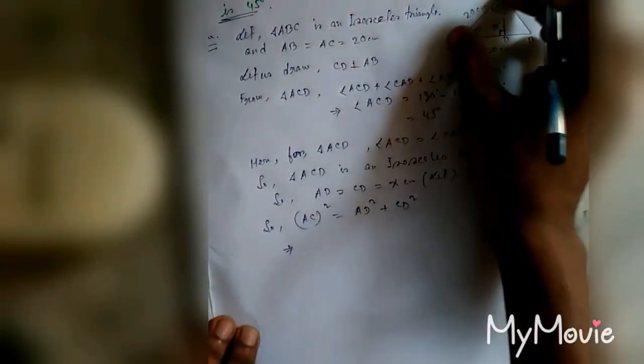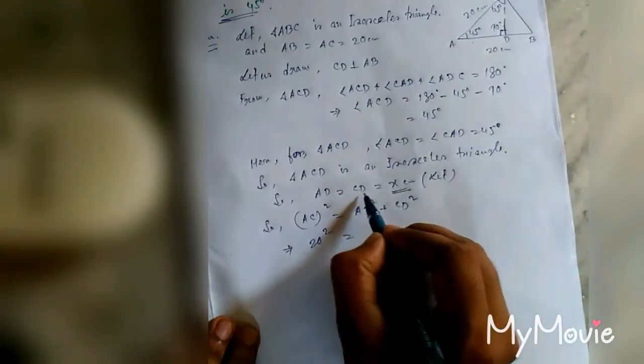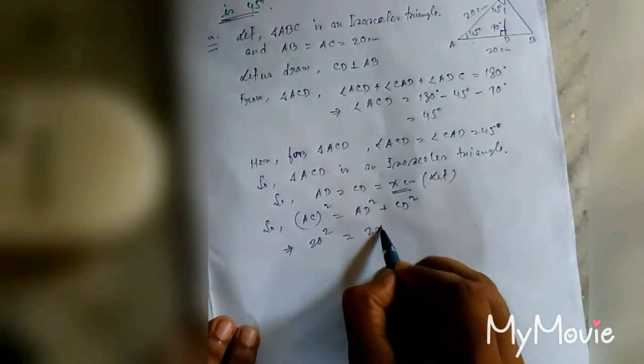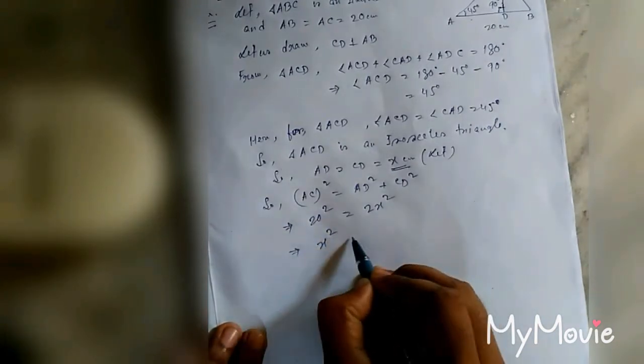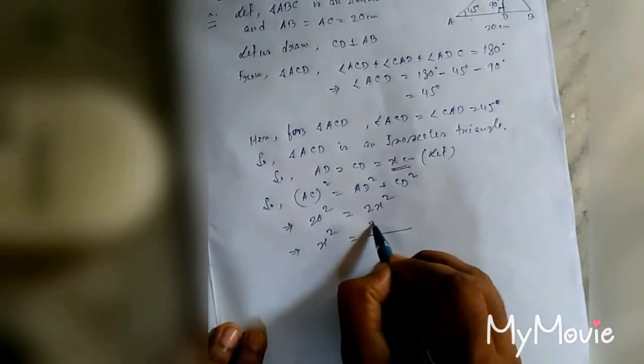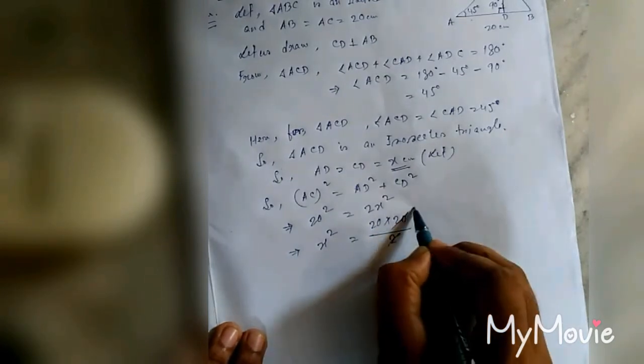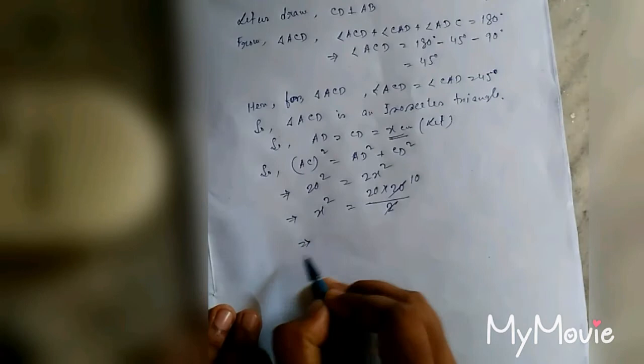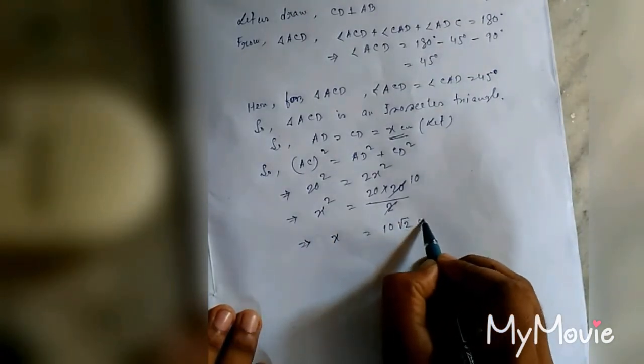So AC is 20 centimeters, 20 square. AD equal to x, CD also x, ultimately 2x square. This equals x square equal to 20 square, 20 into 20 by 2, ultimately x equal to 10 root 2 centimeters.